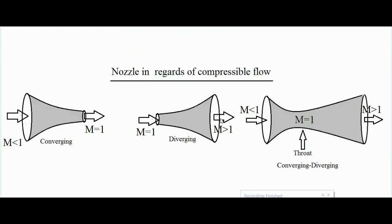Three types of nozzles are used for compressible flow: a converging nozzle, in which cross-sectional area gradually decreases; a diverging nozzle, in which cross-sectional area gradually increases; and a converging-diverging nozzle, in which the area first decreases and then increases — the duct first converges and then diverges.